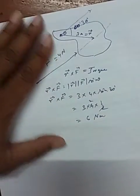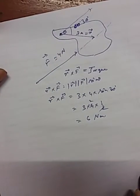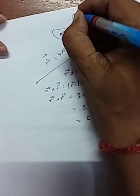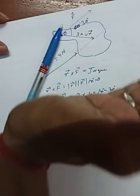But this is the magnitude only, and torque is a vector quantity. So in which direction will this torque act? Your r is here and your f is here, so you have to move your arm from r to f, and it will act upward.